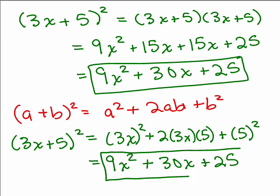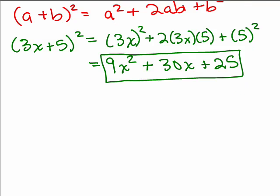Notice I get the same answer using the formula for squaring a binomial — this is a special formula for a special product. The 15x and 15x came from 3x times 5, and then you have 2 of them, so you end up with 2 times 3x times 5. You might also be able to use the formula without showing the middle step by doing some of that multiplication in your head. The first term is 3x times 3x, which is 9x squared. Then for the middle term, take 3x times 5, which is 15x, and double it to get 30x. Then do 5 times 5.